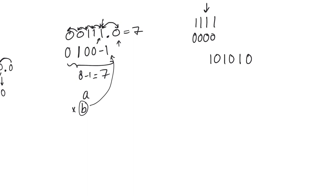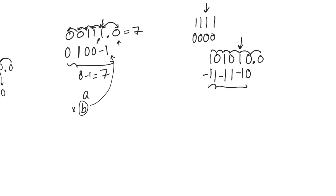The worst case when using Booth's recoding is alternating ones and zeros, such as 1 0 1 0 1 0. Appending a zero and reading overlapping pairs: 0 0 → 0, 0 1 → entering a string, 1 0 → -1, and so on, yielding 1 -1 0 1 -1 0 -1 — actually more non-trivial summands than the original operand. However, statistically Booth's recoding works well because alternating patterns are much less common than blocks of zeros and blocks of ones, which is what typically occurs in practice.